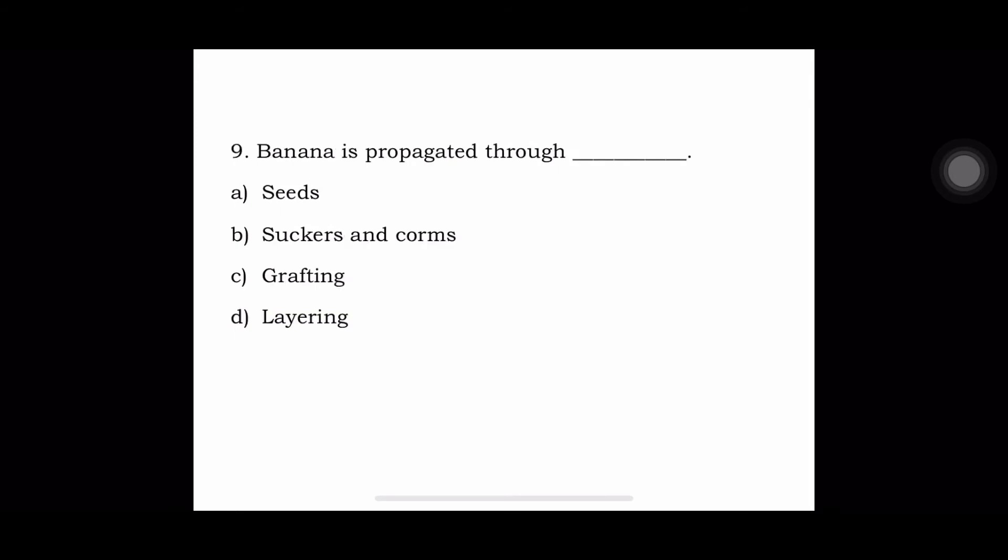Next question: Banana is propagated through a) seeds, b) suckers and corms, c) grafting, or d) layering. The answer is banana is propagated through suckers and corms.